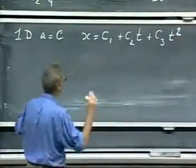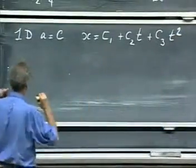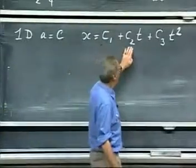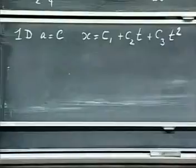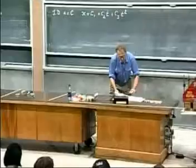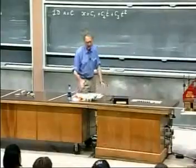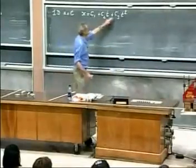And notice, oh, I already erased my example. My example is gone, but you would have seen this was an 8 before, and here we had, what did we have? We had minus 6t, and we had plus 1t squared. So you recognize these three.